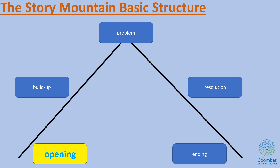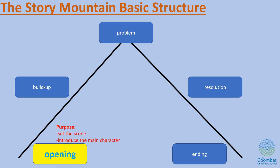The basic structure of a story mountain has five parts: the opening, the beginning, the build-up, the problem, the resolution, and the ending. This lesson focuses on the opening, and we need to remember the purpose of the opening is to set the scene, describe the setting, and introduce the main character. So when we're writing today, we need to hold that purpose in the back of our minds.